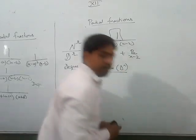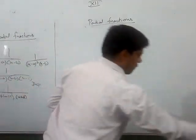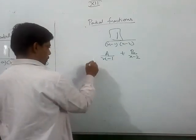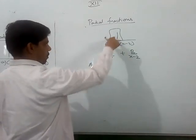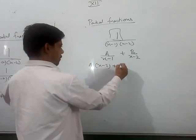And here we have to find the value of A and B. This is known as partial fraction. Now, there are various techniques. Suppose you want to get 1 here in the numerator. I will take the LCM and write like this.